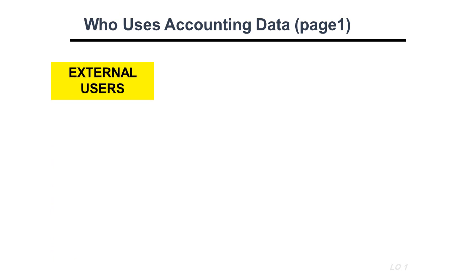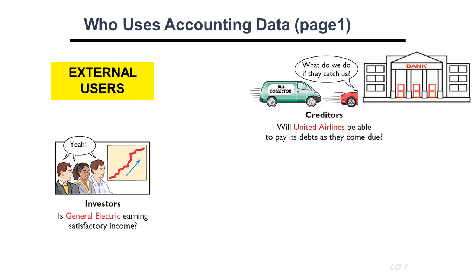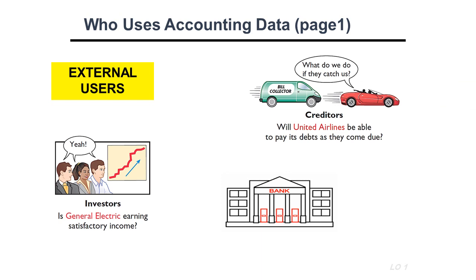In addition to internal users, we have external users, such as investors. Investors — whether they are already investing or are potential investors — need to check the company's data to know if there was any profit or any loss. We also have creditors. If the company decides to borrow money, the creditor or bank needs to know if the company is capable of paying back the debt by checking their accounting data and seeing if the company is profitable and can afford to pay loans back.